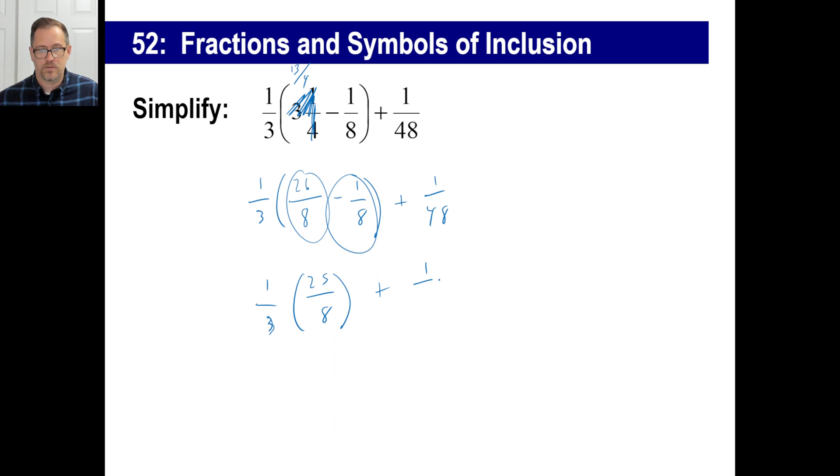And then plus one forty-eight. Order of operations, this is what we do next. So we got twenty-five over twenty-four plus one over forty-eight.